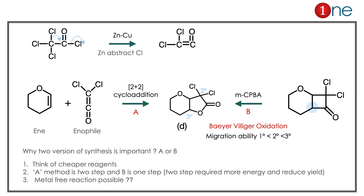Why is this question asked? From a research point of view it is very important, because the same product can be obtained from a cheaper reagent, or in two steps versus one step. Pathway A is two-step: you first form the starting material then proceed. Pathway B is straightforward. You also have to think of metal-free reactions — the first one contains zinc-copper couple (a metal), while the second is almost metal-free. This is the research perspective: choosing starting material and product wisely.